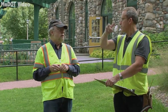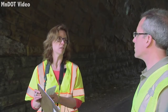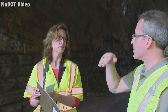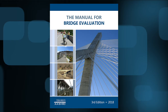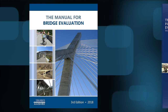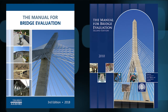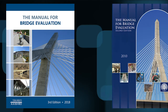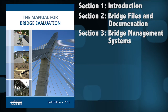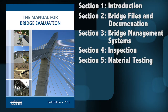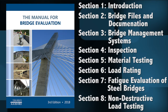It also establishes inspection procedures and evaluation practices that meet the national bridge inspection standards. This new edition, which replaces the 2011 second edition and all subsequent interim revisions, is divided into eight sections with each one representing a distinct phase of an overall bridge inspection and evaluation program.